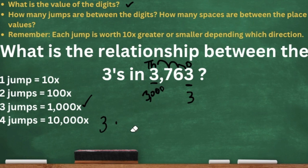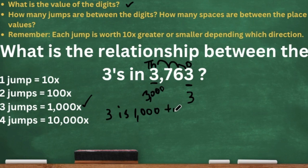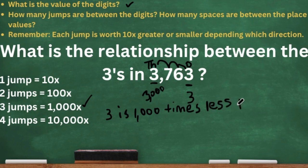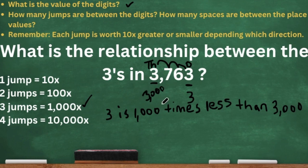Now it's time to write our statements. Three is 1,000 times — is three bigger than 3,000, or is three smaller than 3,000? Three is smaller than 3,000, so we need a keyword that relates to small. So let's say: three is 1,000 times less than 3,000. Or we could say three is 1,000 times smaller than 3,000, or three is 1,000 times fewer than 3,000. Now let's do it the other way: 3,000 is 1,000 times larger than 3.